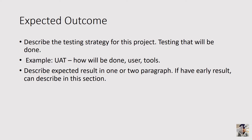The last section is the expected outcome. You need to describe what you expect as an outcome for your project. One way is to describe the testing strategy — for instance, you can say you want to do UAT, which stands for User Acceptance Test. In the UAT section, explain how it will be done, who the users are, the tools used, and describe your test plan.